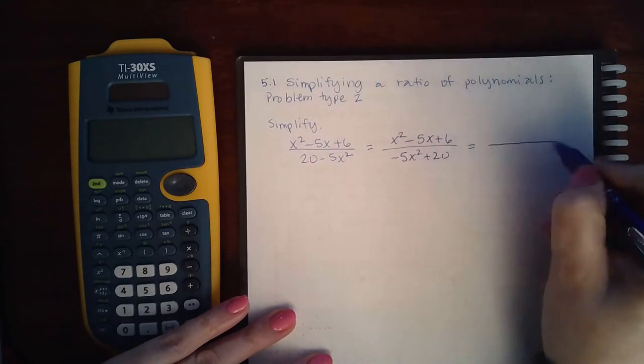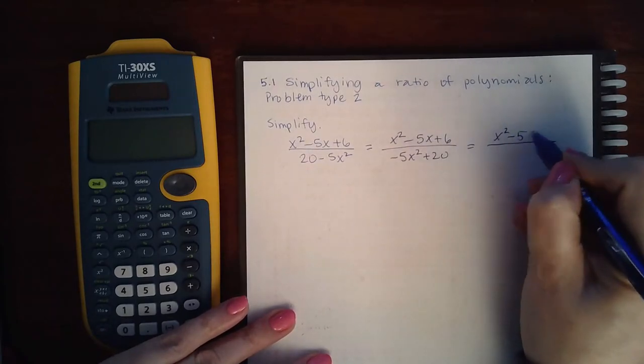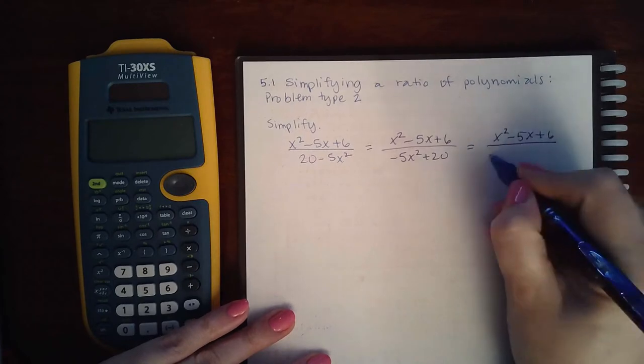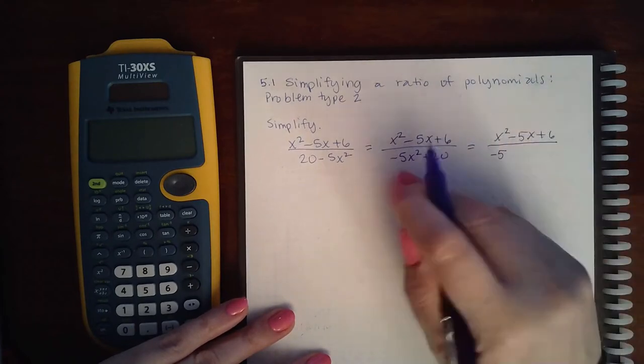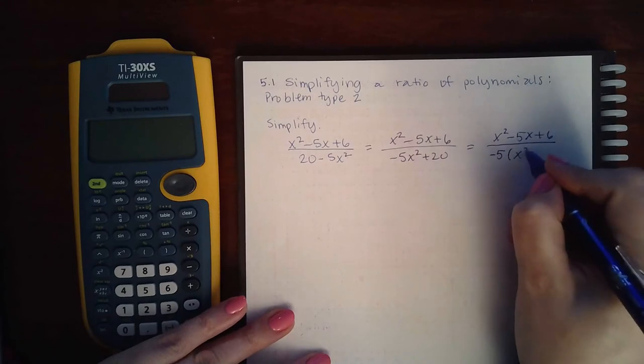Then I will factor out a GCF. There's no GCF in the numerator, but in the denominator I have to factor out a negative because the front term is negative, and it does have a GCF of 5.